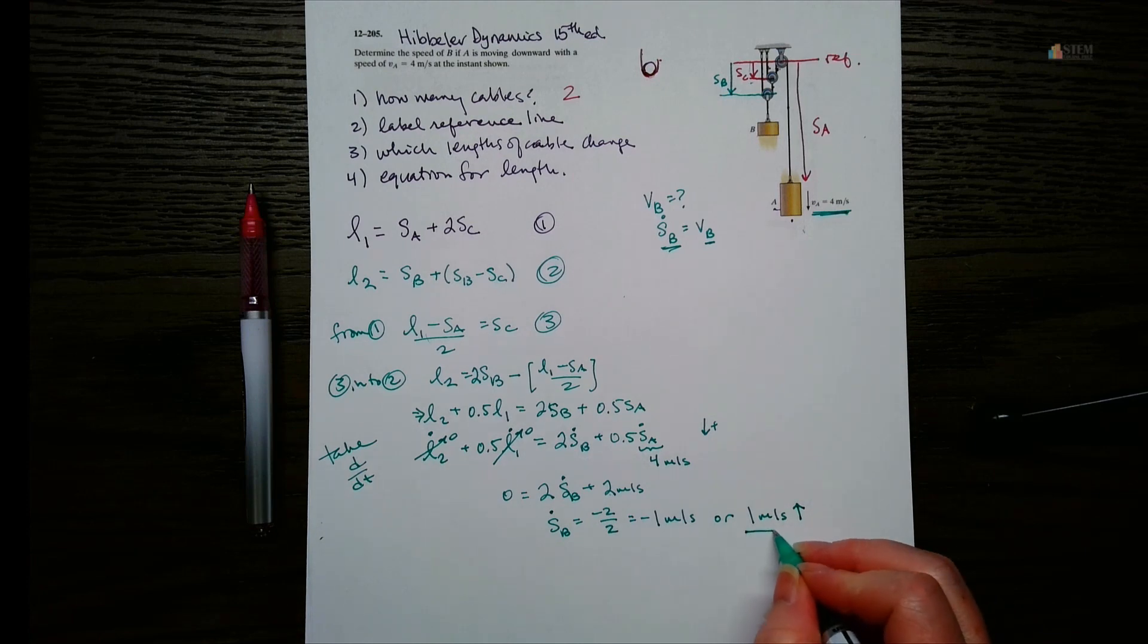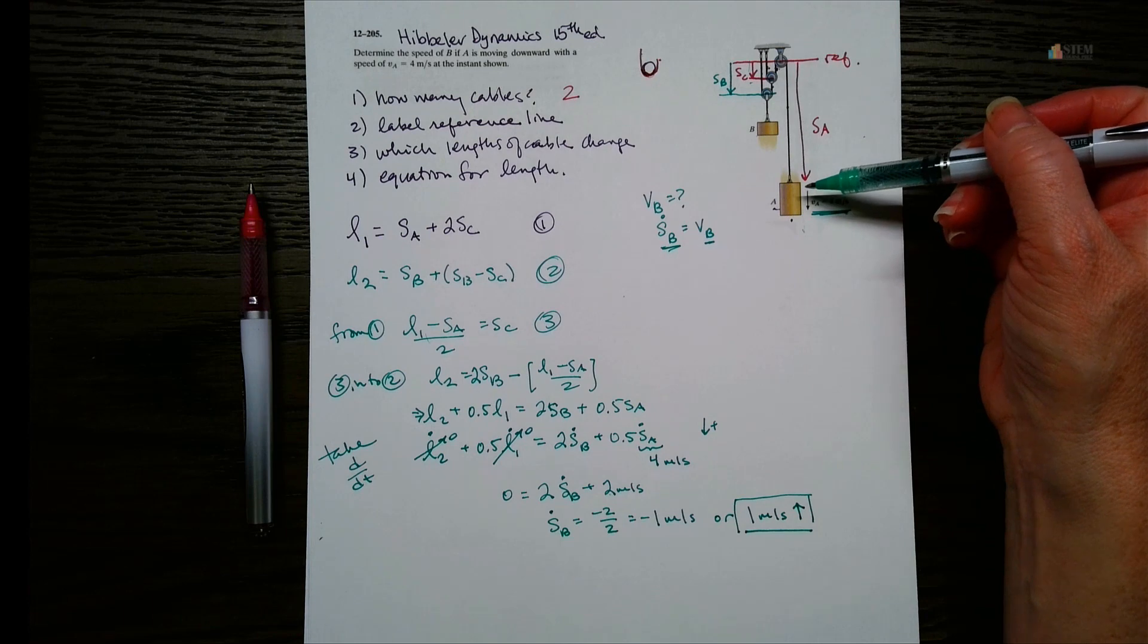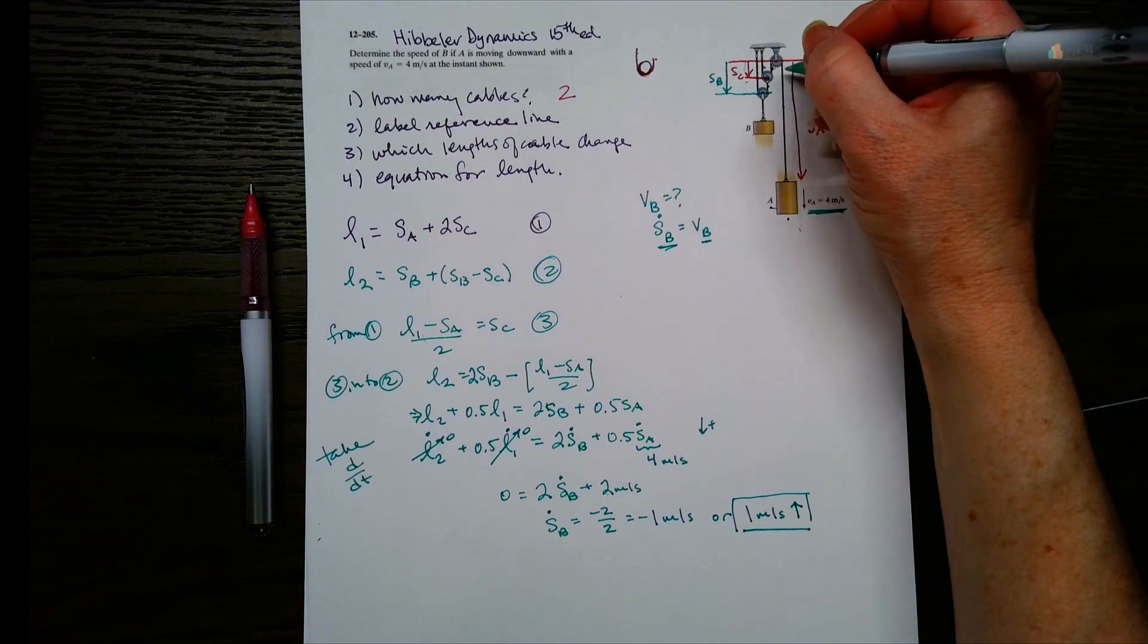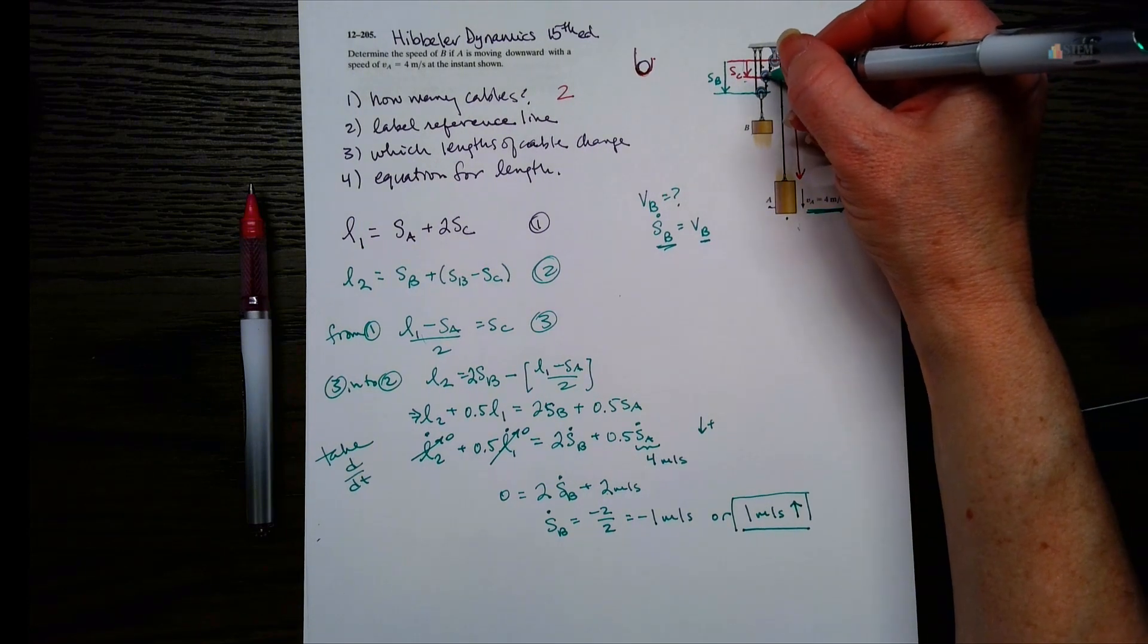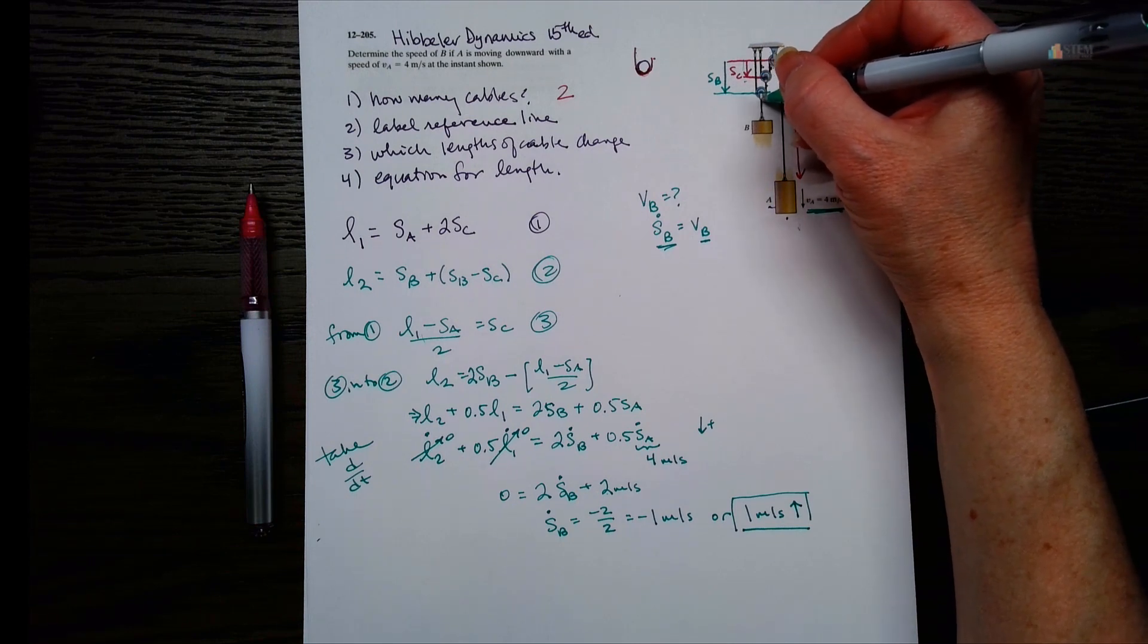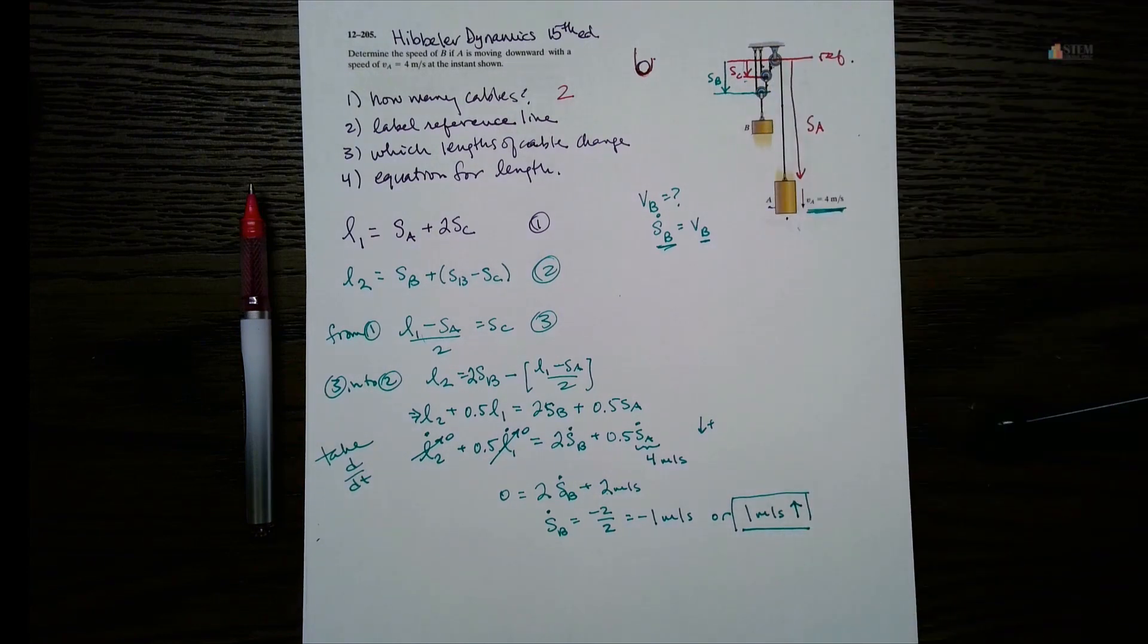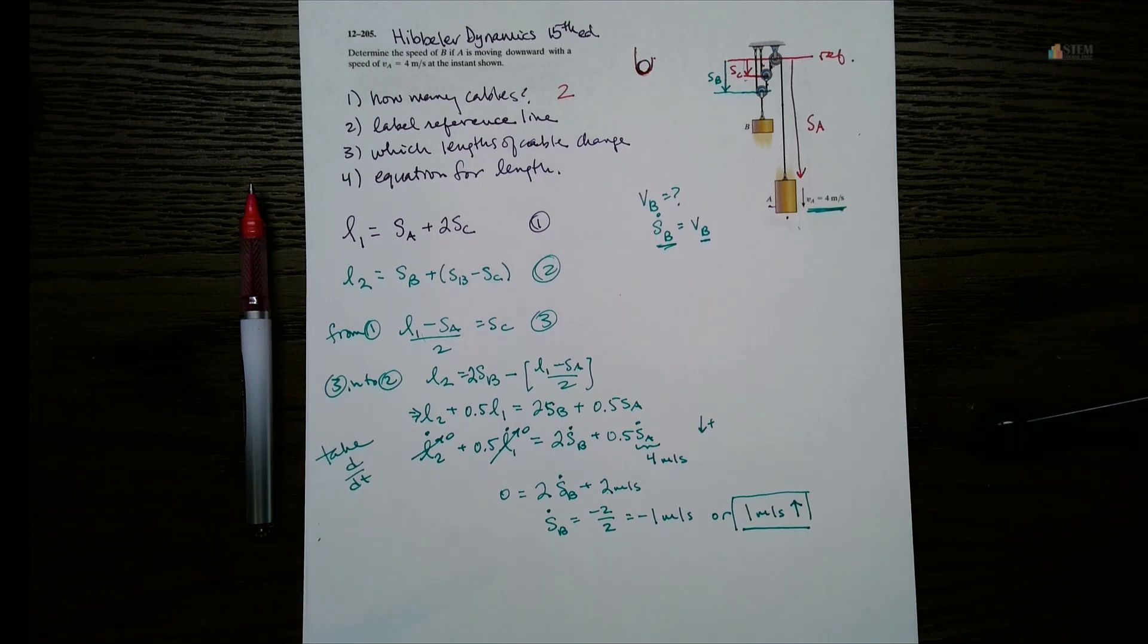Alright, so block B is moving up, which makes sense, right? Because of the way the pulleys act. So as this gets longer and goes down, that cable here pulls this pulley C up, which then in turn pulls this mass B up. So that's how you go about doing that one. And hopefully that made sense. And I will see you next time for another problem.